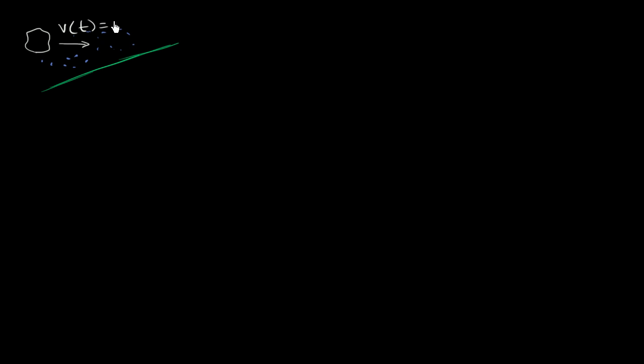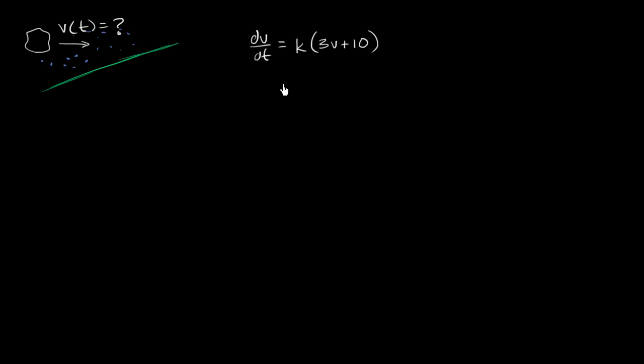I'm interested in modeling the velocity of an asteroid as it is entering the atmosphere. This is the atmosphere right over here, with some random air particles drawn in. We want to figure out velocity as a function of time. We're given a differential equation to help us model this: the rate of change of velocity with respect to time is equal to a proportionality constant times three V plus 10. We're going to solve this differential equation and use actual data — velocities at particular times — to figure out the particular solution, the exact V of T.